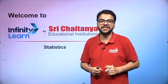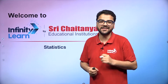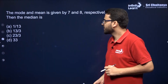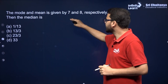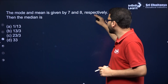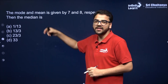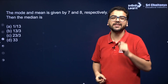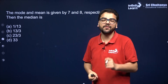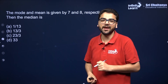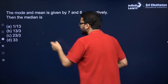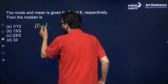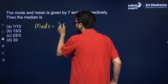Let's do some MCQs in the chapter Statistics. The mode and mean are given by 7 and 8 respectively, and we have to find the median. This question is based on the empirical relationship between mean, median, and mode. The formula is: Mode = 3·Median − 2·Mean.